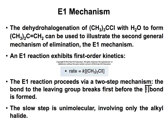E1 reactions share a lot of features with SN1 reactions. For example, E1 reactions have first-order kinetics, meaning that they are unimolecular. SN1 reactions were the same, where only the alkyl halide concentration was important in the rate, because that was the rate determining step. The rate of an E1 reaction is determined by k multiplied by the alkyl halide concentration.